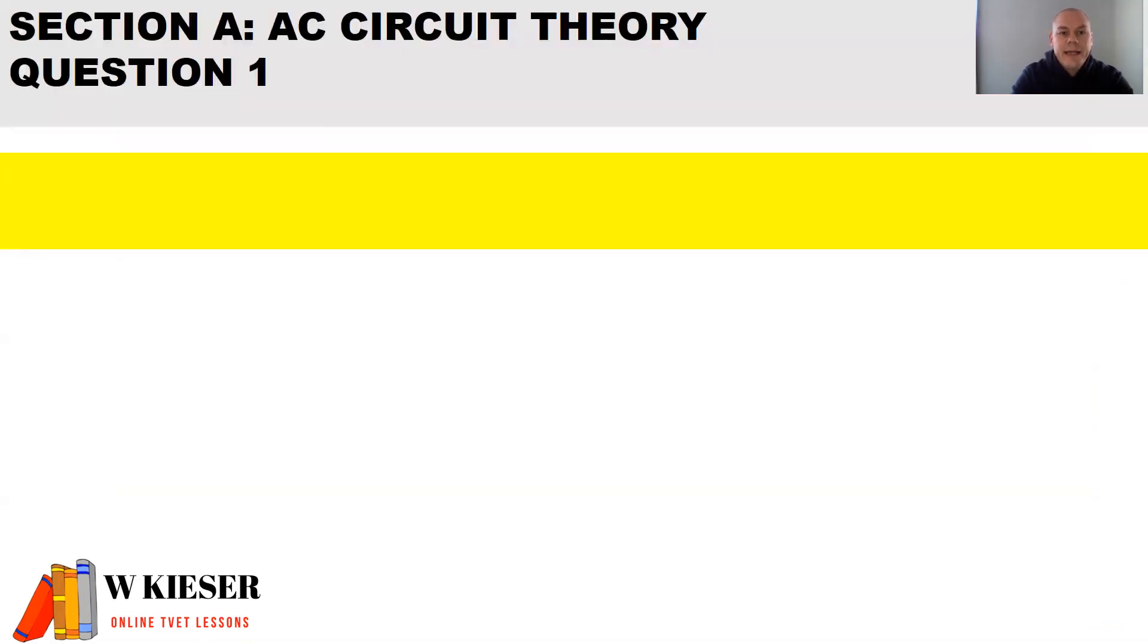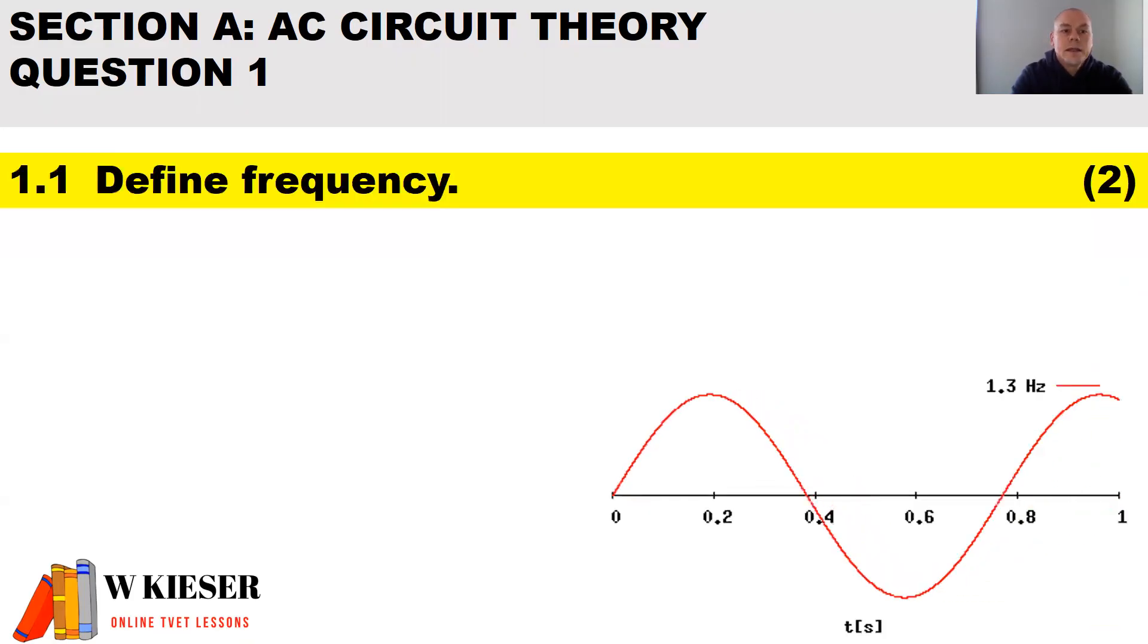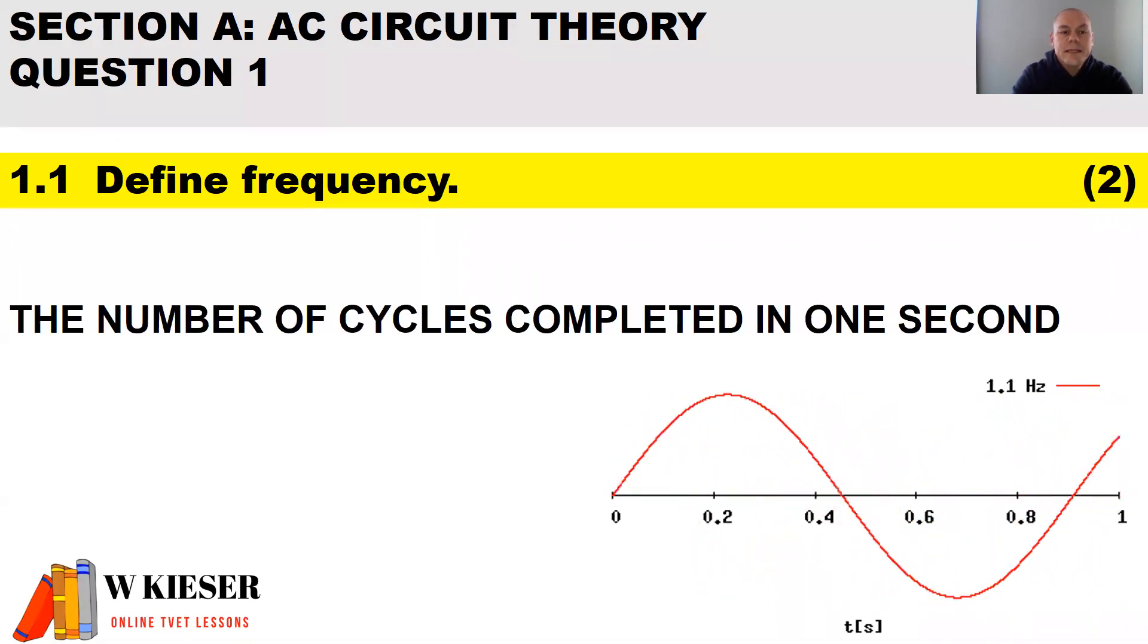Section A is about AC Circuit Theory. In question one, we need to define frequency for two marks. To define frequency: it is the number of cycles completed in one second.